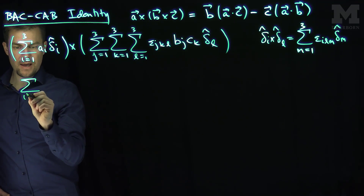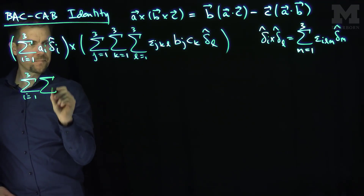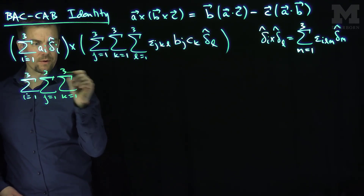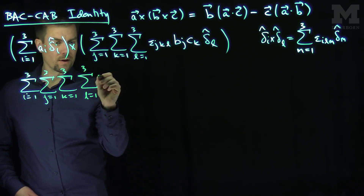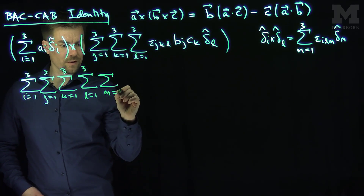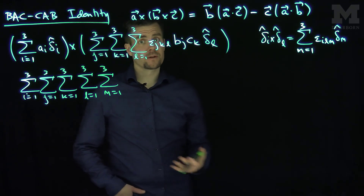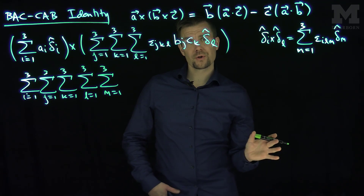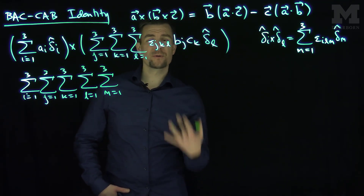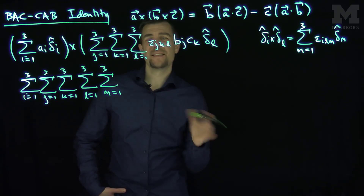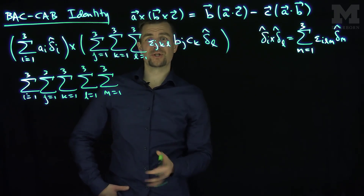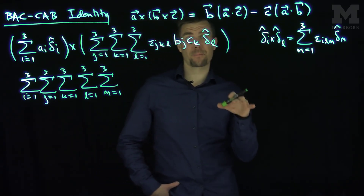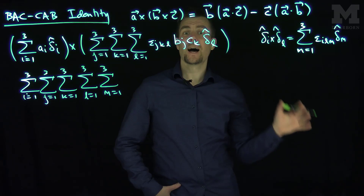The five summations are: i from 1 to 3, j from 1 to 3, k from 1 to 3, l from 1 to 3, and m from 1 to 3. When we're doing these vector identities, it's very useful to write out the sums to keep track of everything in sequence. Eventually we'll use Einstein notation, which allows us to not write so many sums. But at this first stage it's helpful to write them down so we can track each index separately.